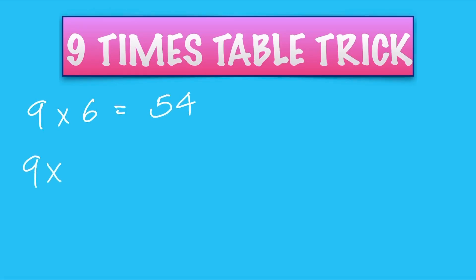9 times 8: 1 away from 8 is 7, and 7 and 2 make 9, so it's 72.